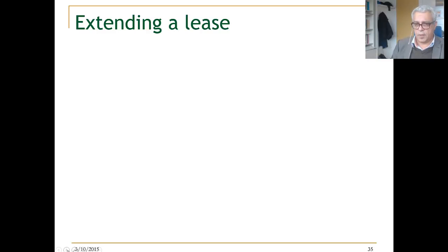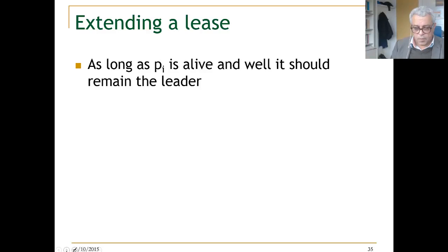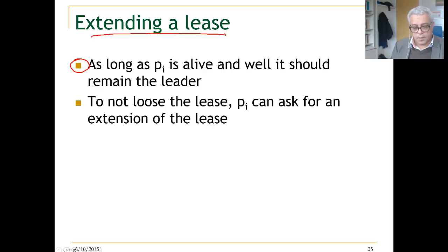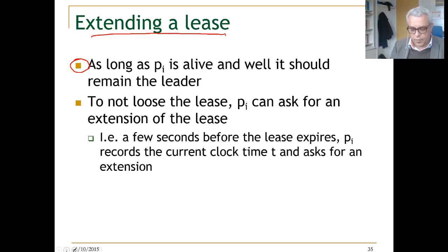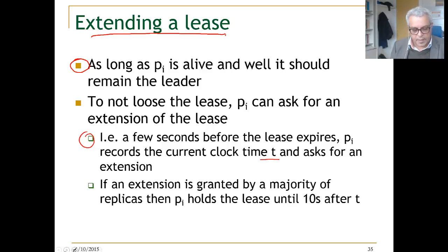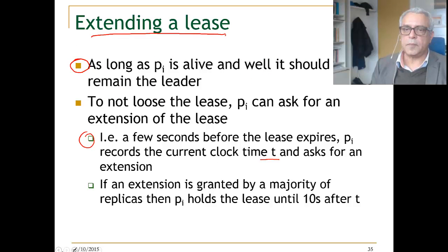That is really the algorithm now. We have compensated for the asynchronous network communication time, sending and receiving messages, and we also compensated for the drift. Now we look to extending the lease. As long as P1 is alive and well, it should remain as the leader. To not lose the lease, from time to time he requests an extension of the lease. He can do it a few seconds before the lease expires. P1 records the current clock time and asks for extension. If an extension is granted by a majority of replicas, then he can continue holding the lease 10 more seconds.